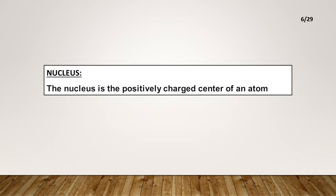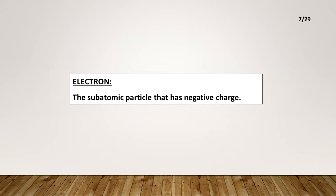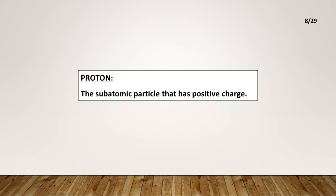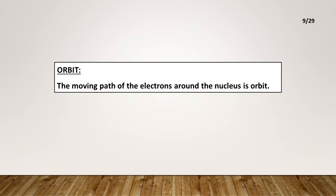Nucleus: The nucleus is the positively charged center of an atom. Electron: The subatomic particle that has negative charge. Proton: The subatomic particle that has positive charge. Orbit: The moving path of the electrons around the nucleus is the orbit.